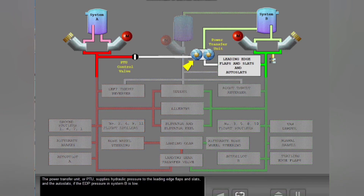The power transfer unit, or PTU, supplies hydraulic pressure to the leading edge flaps and slats and the auto slats if the EDP pressure in System B is low.